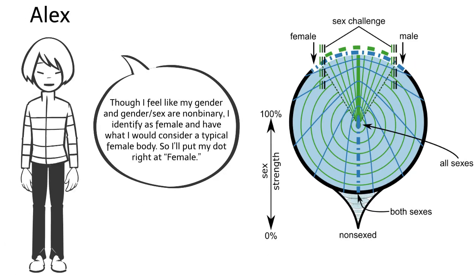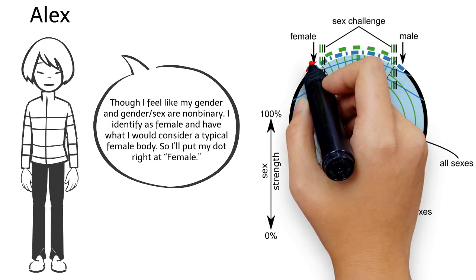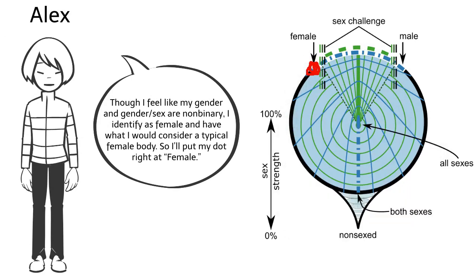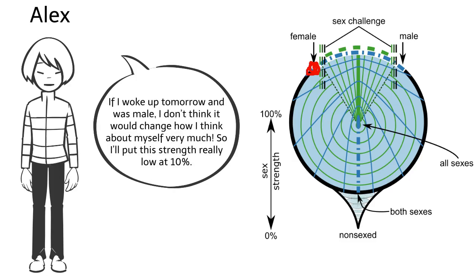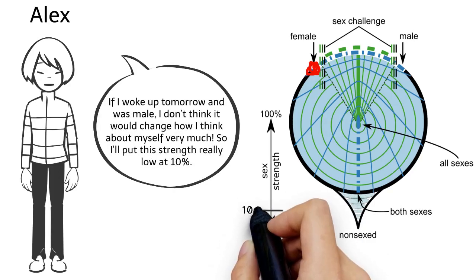Though I feel like my gender and gender sex are non-binary, I identify as female and have what I would consider a typical female body. So I'll put my dot right at female. If I woke up tomorrow and was male, I don't think it would change how I think about myself very much. So I'll put this strength really low at 10%.